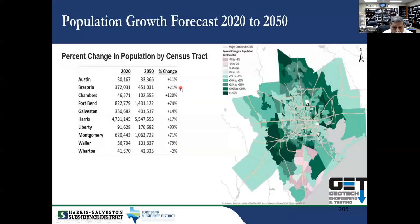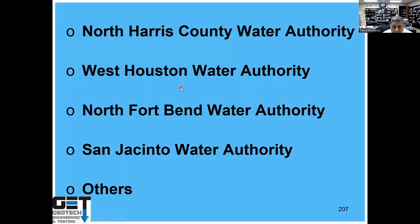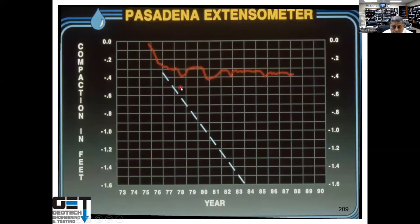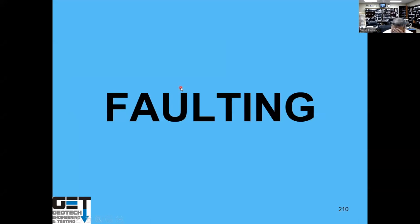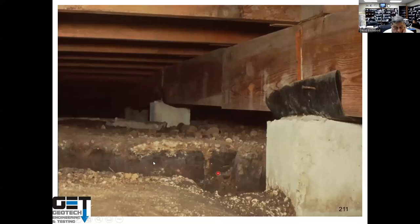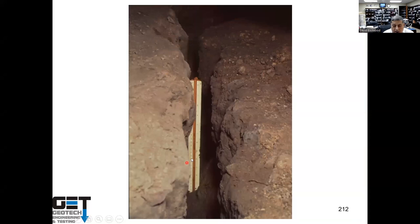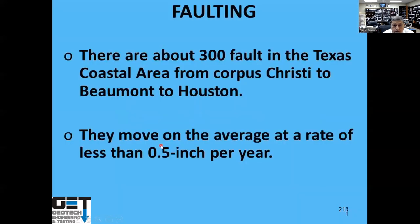As the land subsides, it creates faults. If part of Houston is dropping and the other part is stable, there are cracks in the ground that have been there for millions of years — these cracks become activated and are called geologic faults. They're not earthquake faults. You can see a crack in Ellington Field in the I-45 South area that can go down 200 feet. There are about 300 faults in the Houston area, all the way from Corpus Christi to Beaumont, and they move about half an inch a year.